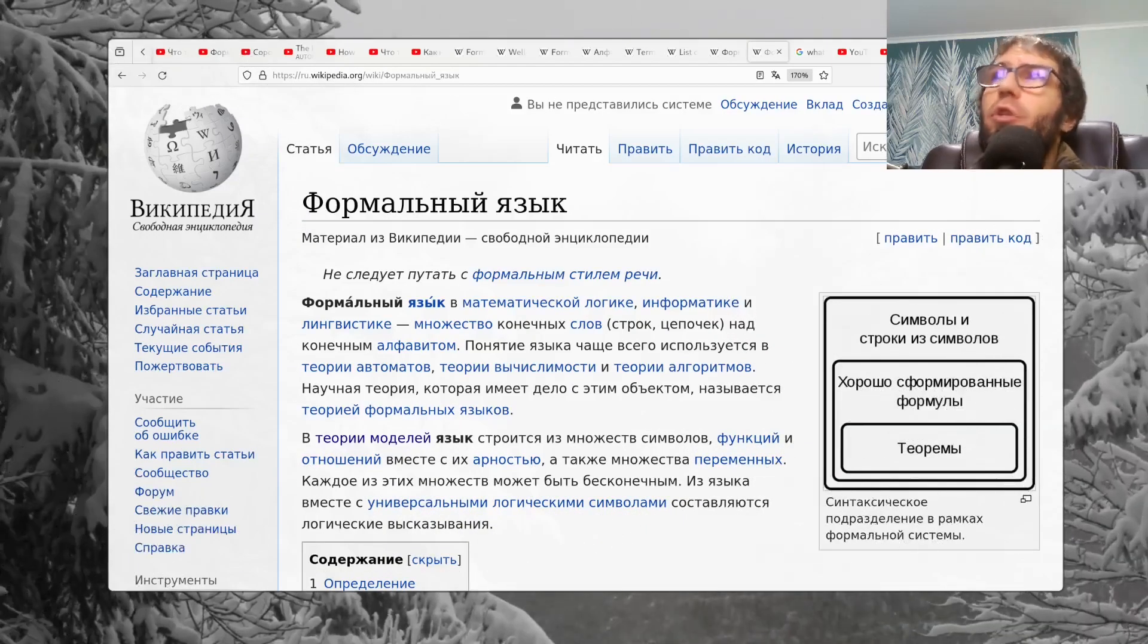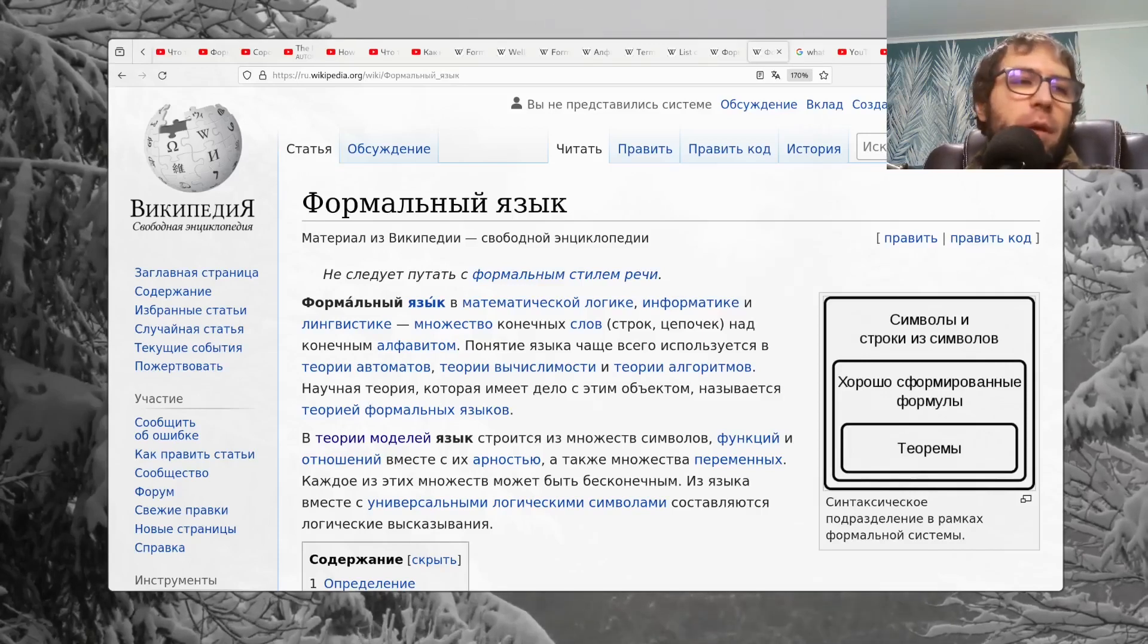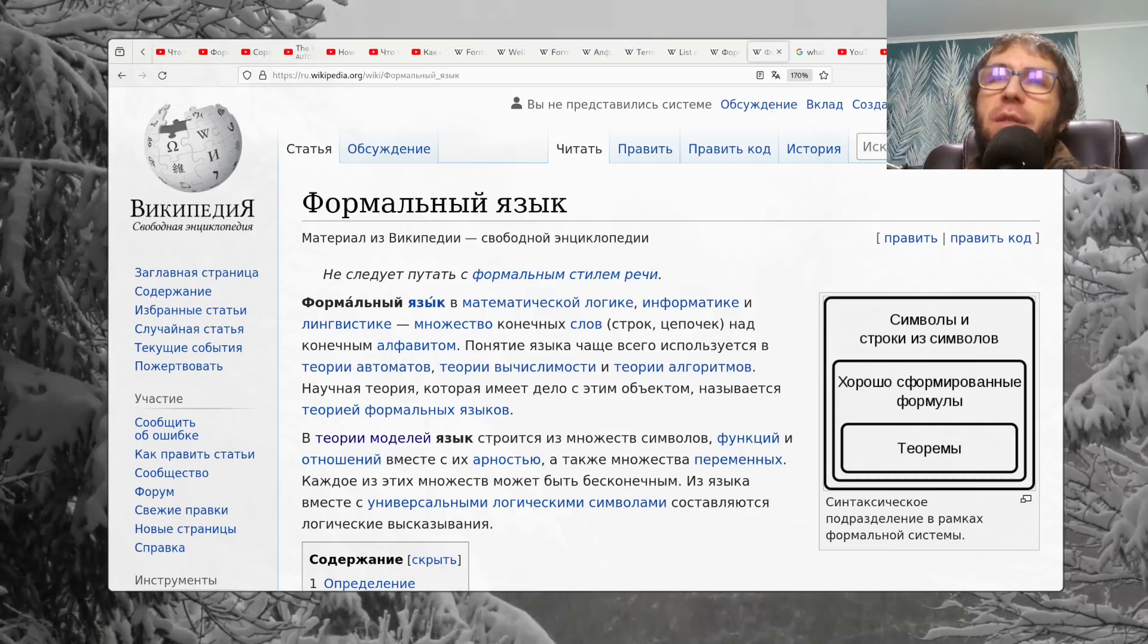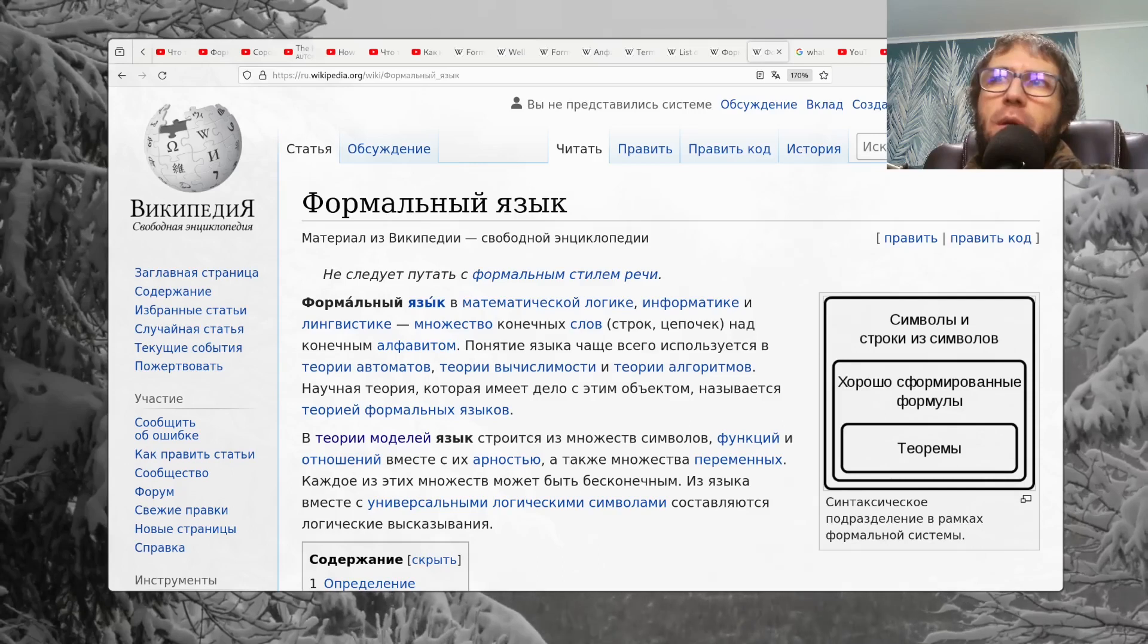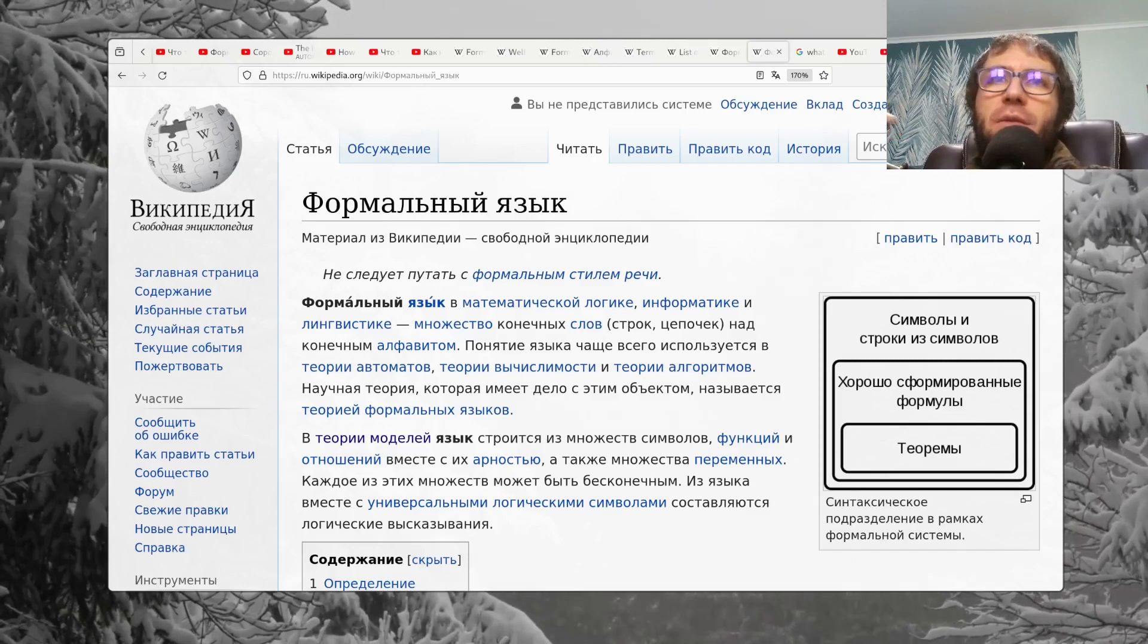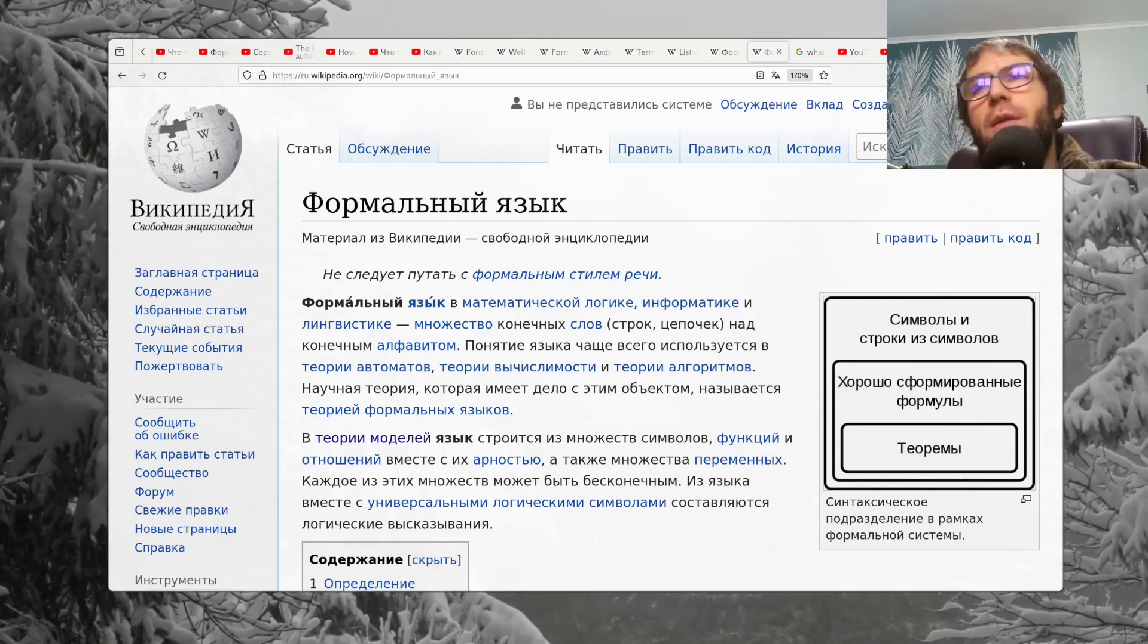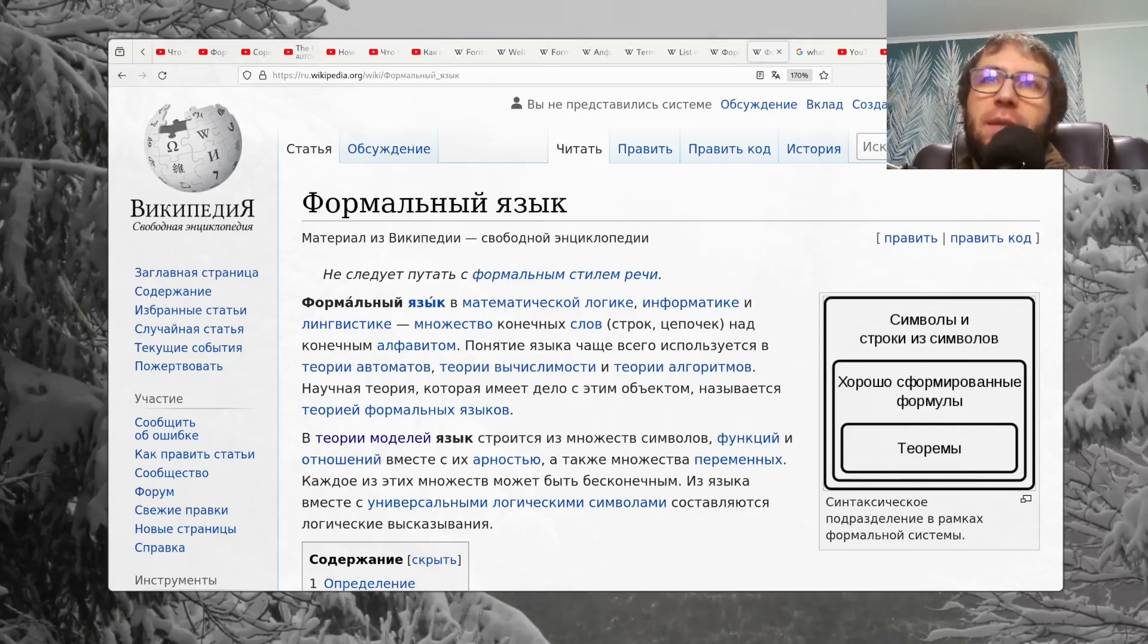What is the formal language? If we take the set of some symbols and build from this set all possible subsequences of these symbols, and if we take some subset of this constructed set of subsequences, this concrete subset will represent some language.